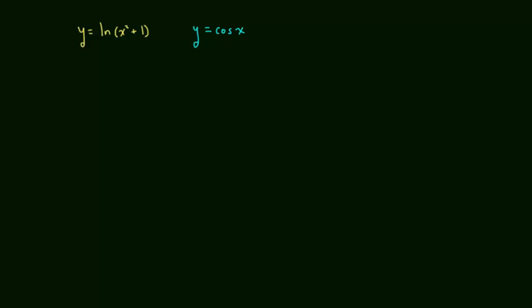Lesson 3 starts off with a review concept. Let R be the region enclosed by the graphs of y equals the natural log of x squared plus 1, and y equals cosine of x. Part A wants us to find the area, so we will start off with a graph of these two. This is calculator active, so I'm going to draw a set of axes and you should be graphing this in your calculator.